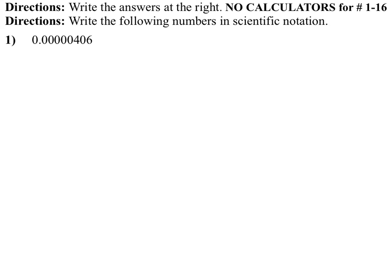For numbers 1 through 4, we will be writing these in scientific notation, but we will not be using calculators. In scientific notation, the decimal goes after the first non-zero number, because 4 is the first non-zero number farthest to the left.